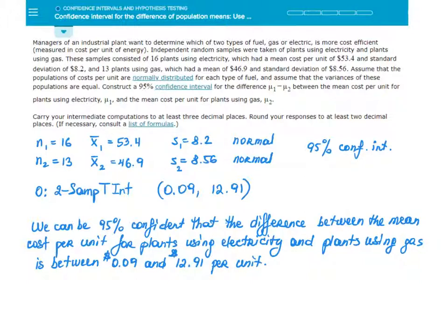Carry your intermediate computations to at least three decimal places. Round your responses to at least two decimal places. Let's see what we know. We know that the first sample size n₁ is 16, sample mean is 53.4, and sample standard deviation is 8.2. We also know that the second sample is 13, sample mean is 46.9, and sample standard deviation is 8.56.